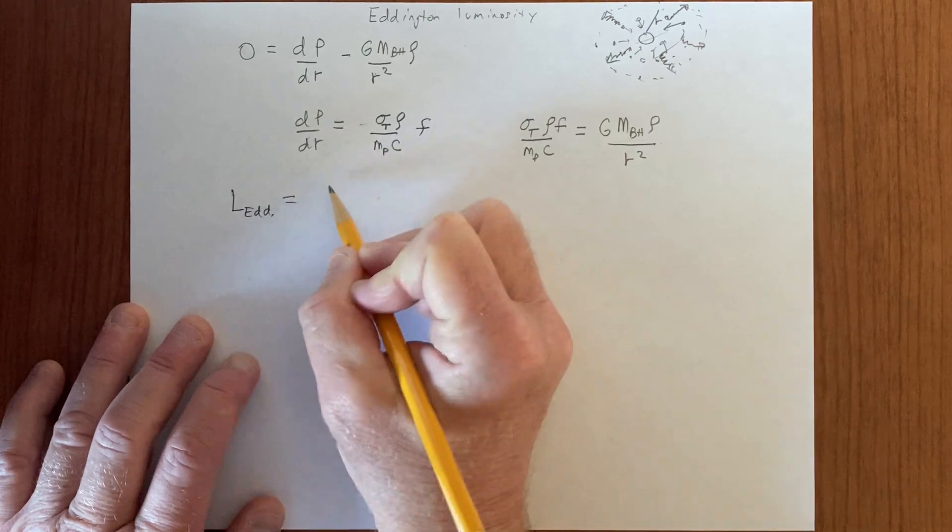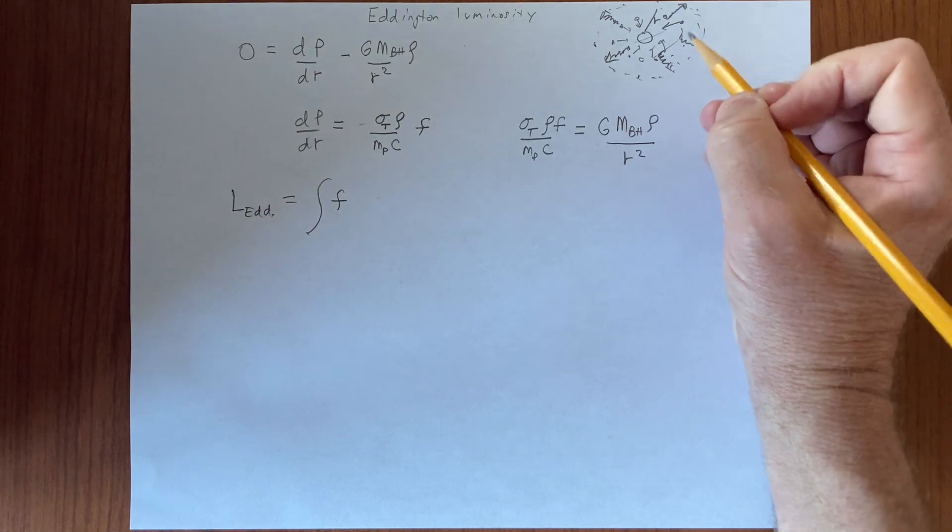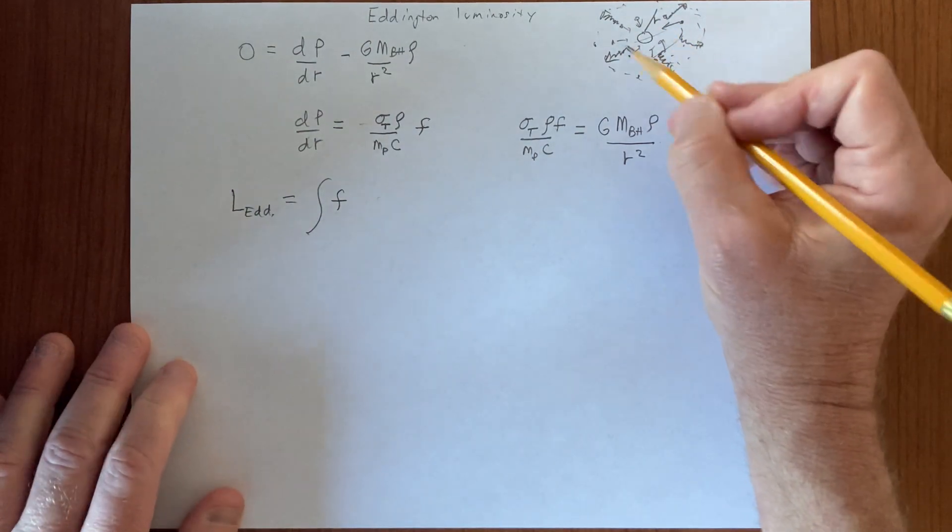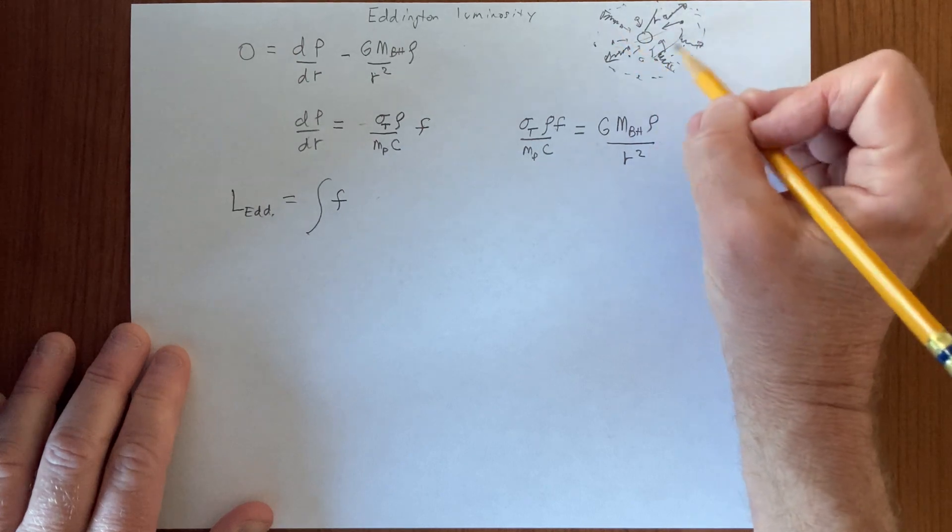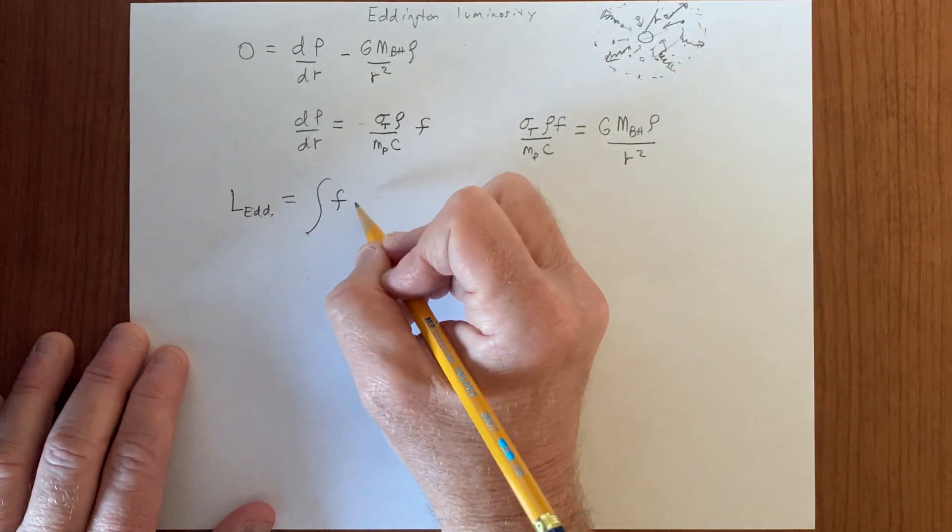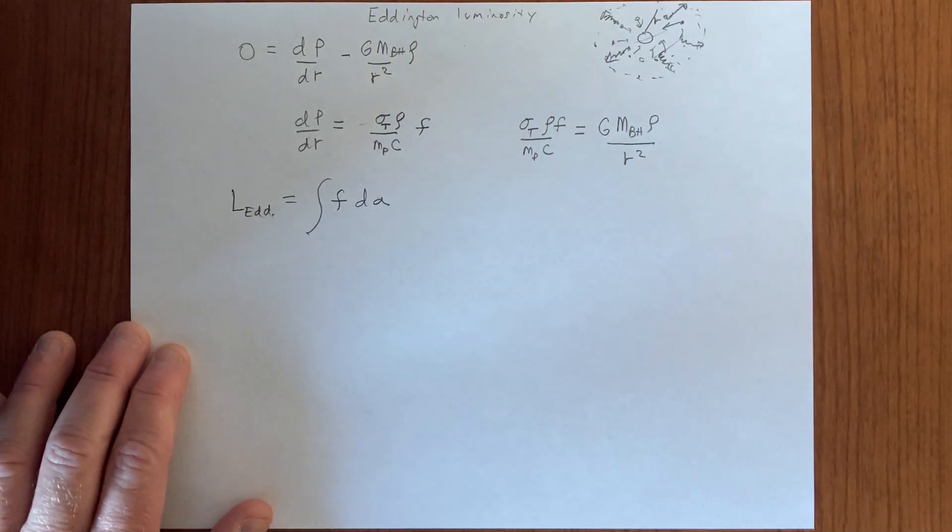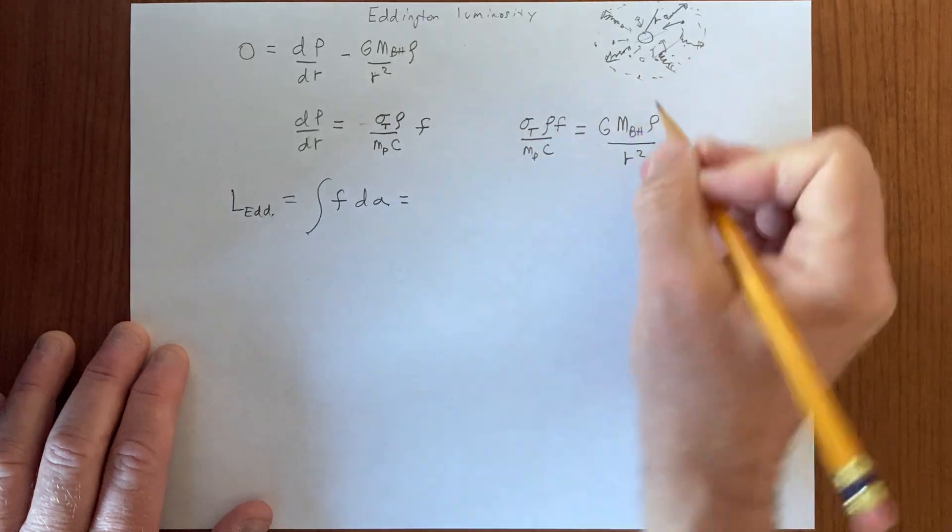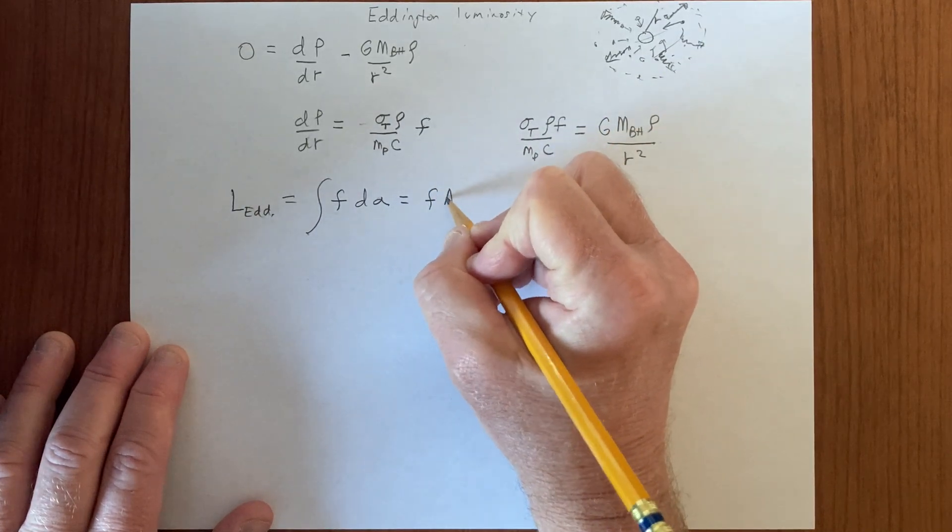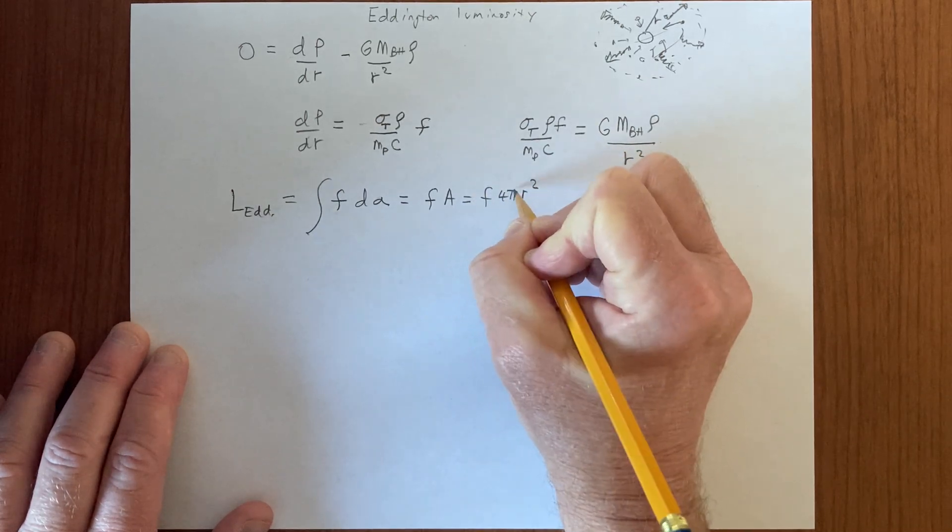The flux is just the energy per unit area at some radial distance, and if we integrate that over the entire sphere of radius r, we'll get the total luminosity generated there, so we have to integrate over a sphere, over an area. These terms are all constant, so we'll get flux times area, which is flux times 4 pi r squared.